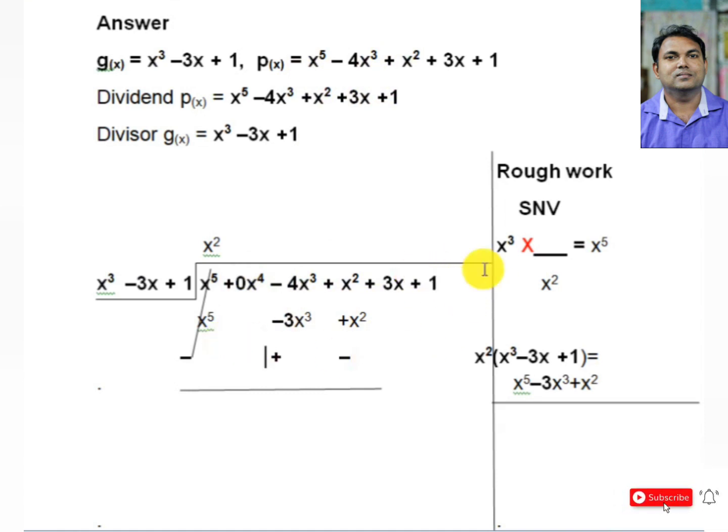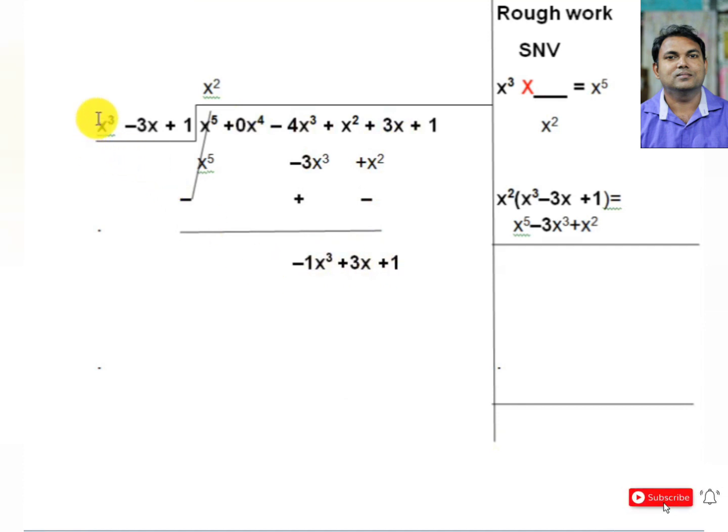We find that 0x⁴, so this is -4 and -4x³. Minus 4 minus -3 gives -1x³. Plus x² minus x² is 0. Plus 3x remains. Then we change the sign. So x³ minus...